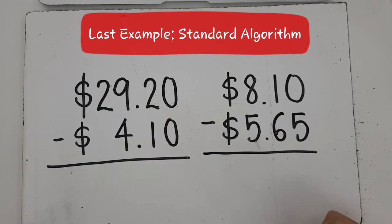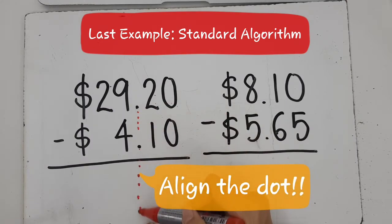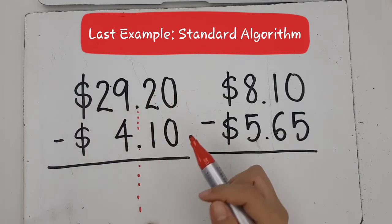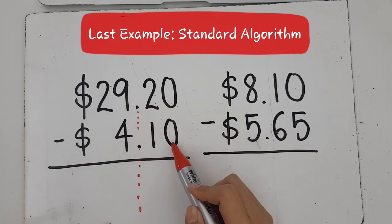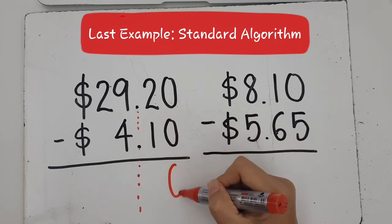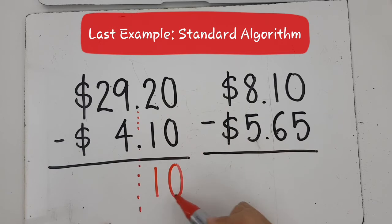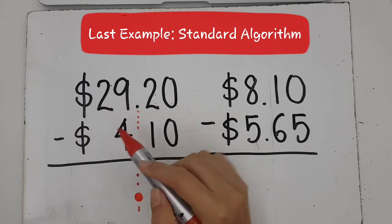And now for our very last method would be the standard algorithm. Now, remember, the only important thing about using this method is you need to align the place values. Can you see I have aligned my dots? Why? Because everything in front of the dot is dollars and everything behind is cents. So I'm going to do this easy example. First, we have $29.20 minus $4.10. I'm going to do the cents first. I'm starting from the right. 0 minus 0 is just 0. 2 minus 1 is just 1. You can see just 20 minus 10 is 10.